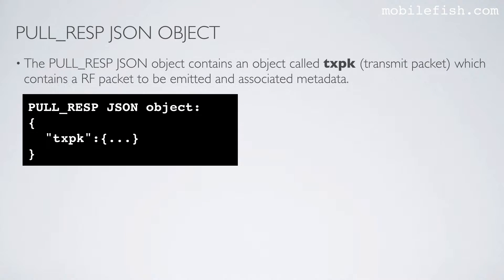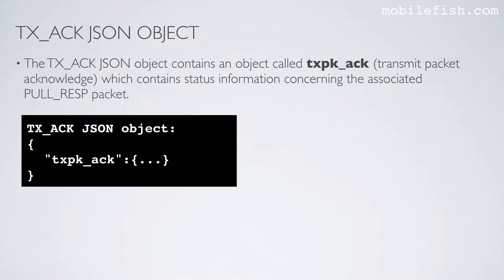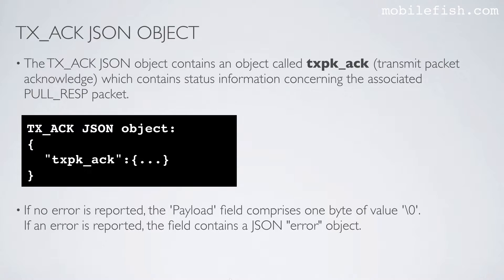The pull response JSON object contains an object called transmit packet, which contains an RF packet to be emitted and associated metadata. The transmission acknowledge JSON object contains an object called transmit packet acknowledge, which contains status information concerning the associated pull response packet. If no error is reported, the payload field comprises one byte of a specific value. If an error is reported, the field contains a JSON error object.